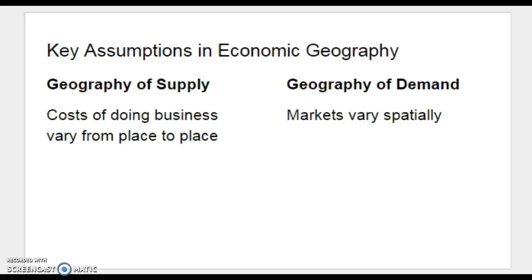The second piece is the geography of demand. Markets vary spatially — different markets exist in different parts of the world, determined by the location of consumers. Wealth, or purchasing power, indicates what's in demand and what products or services people want to acquire. Demand also comes down to general tastes: around the world, people want different things based on culture, personal preferences, and norms. These are the basic ground rules of supply and demand in economics.